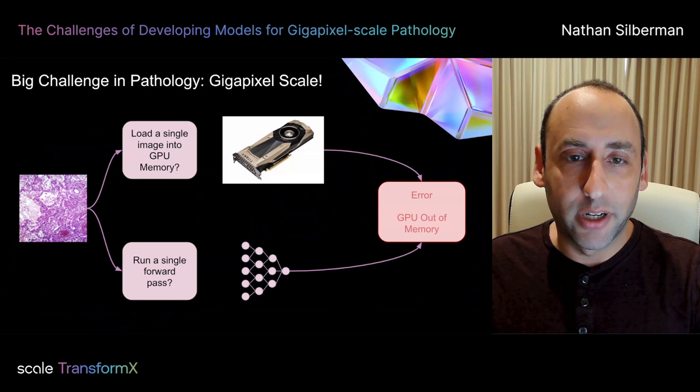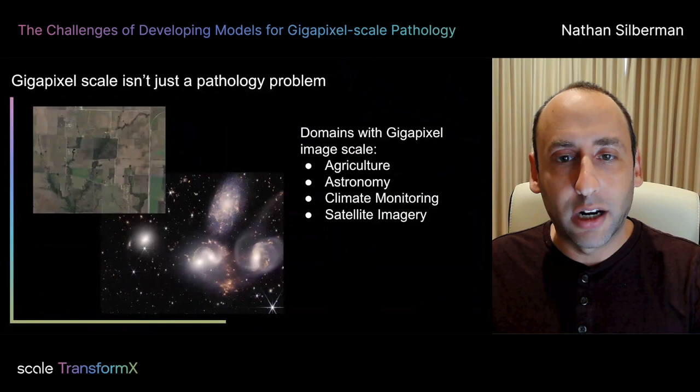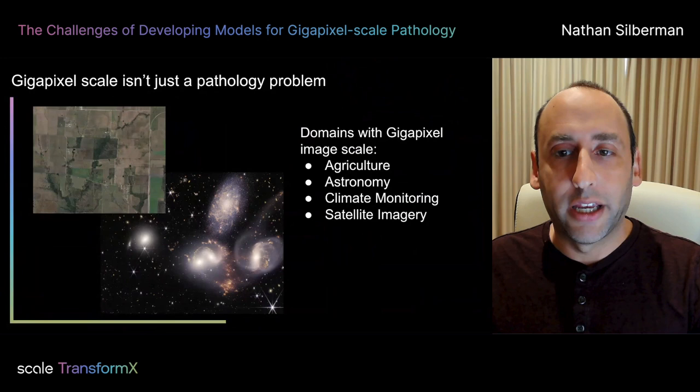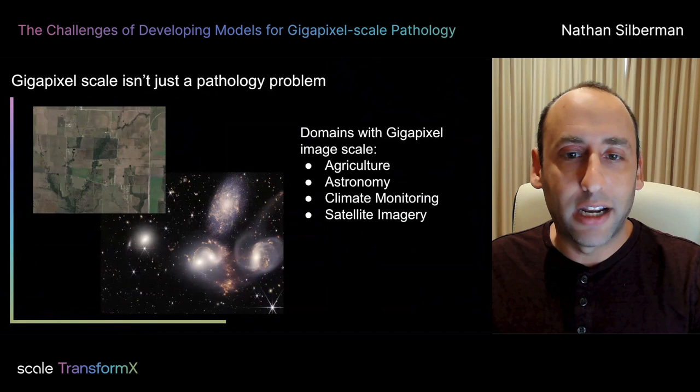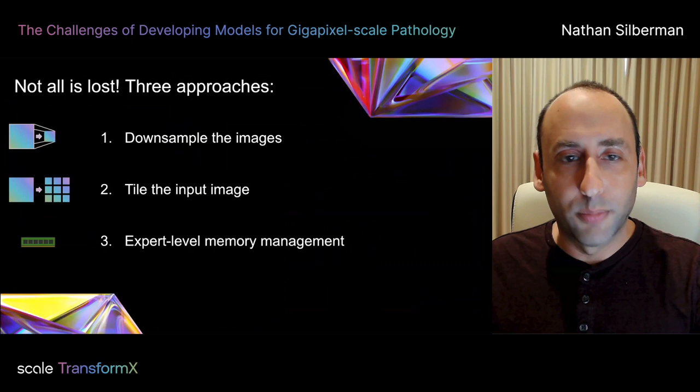It's worth pointing out that gigapixel scale isn't just a pathology problem. Many industries like agriculture, astronomy, and climate monitoring are being inundated with images of enormous and growing scale. And the computational tooling, which has proven so well for so many computer vision applications, unfortunately just can't be used out of the box for images of this magnitude. Conceptually, there are three ways to deal with gigapixel images: down-sample the images, split the images into smaller tiles and do some compute on each tile, and finally apply sophisticated techniques to both learning and inference routines to allow them to operate at the gigapixel scale.